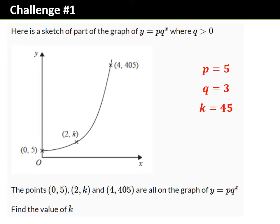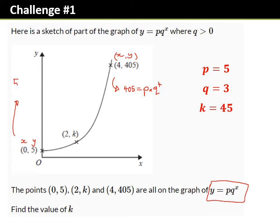So these are your answers. Where they come from: looking at these, we've got the equation y = pq^x — it's an exponential equation. This coordinate is an (x, y) pair and so is this one. So I get two equations: 405 = p × q^4, substituting in x and y. I'm going to do the same with the other coordinates, so y is 5 when x is 0, giving 5 = p × q^0.